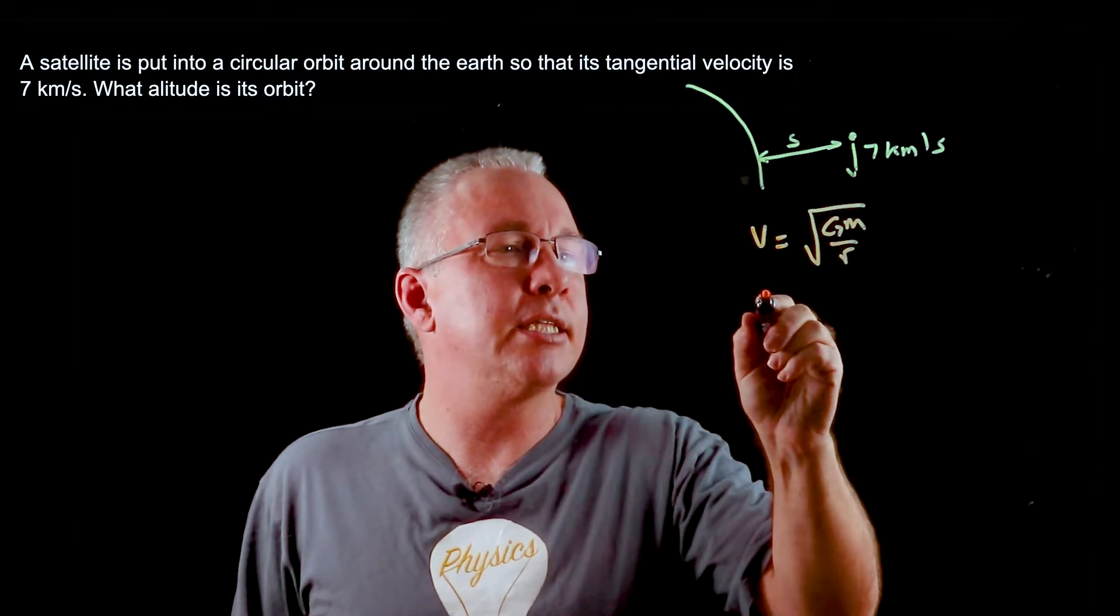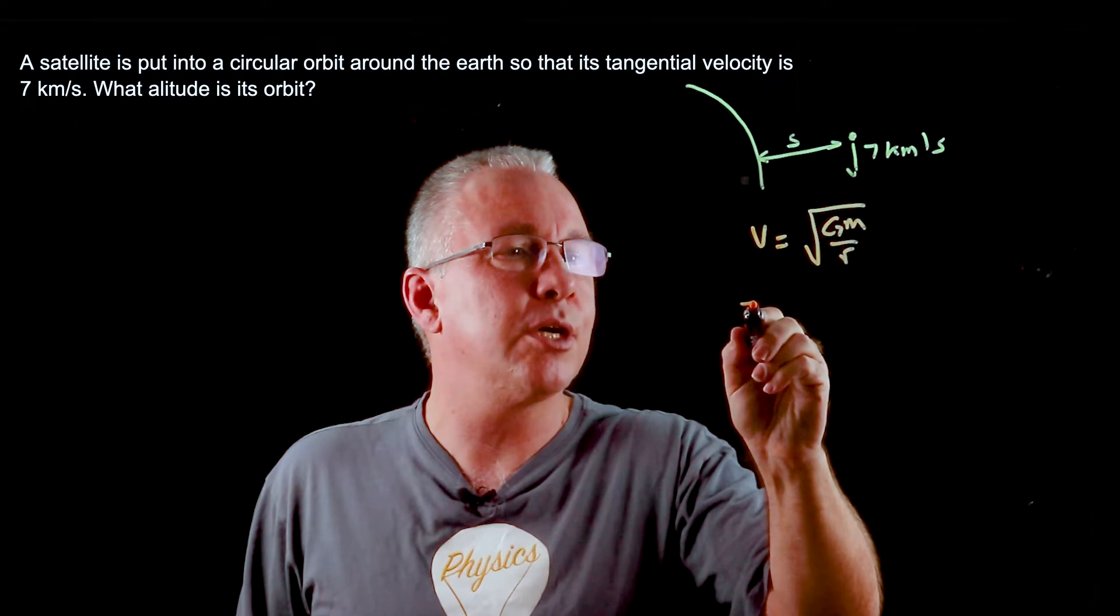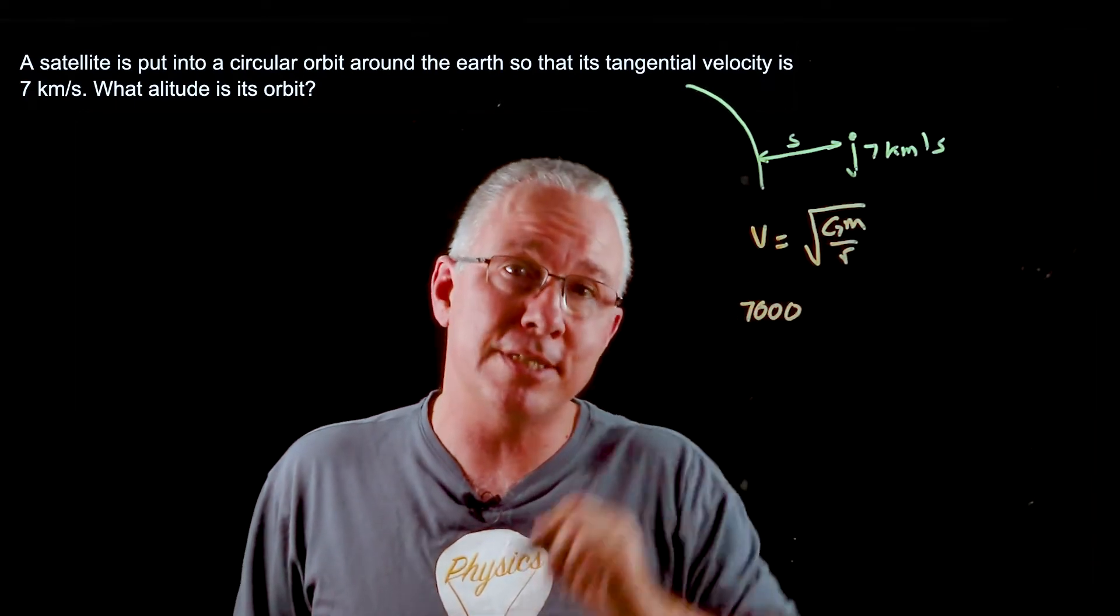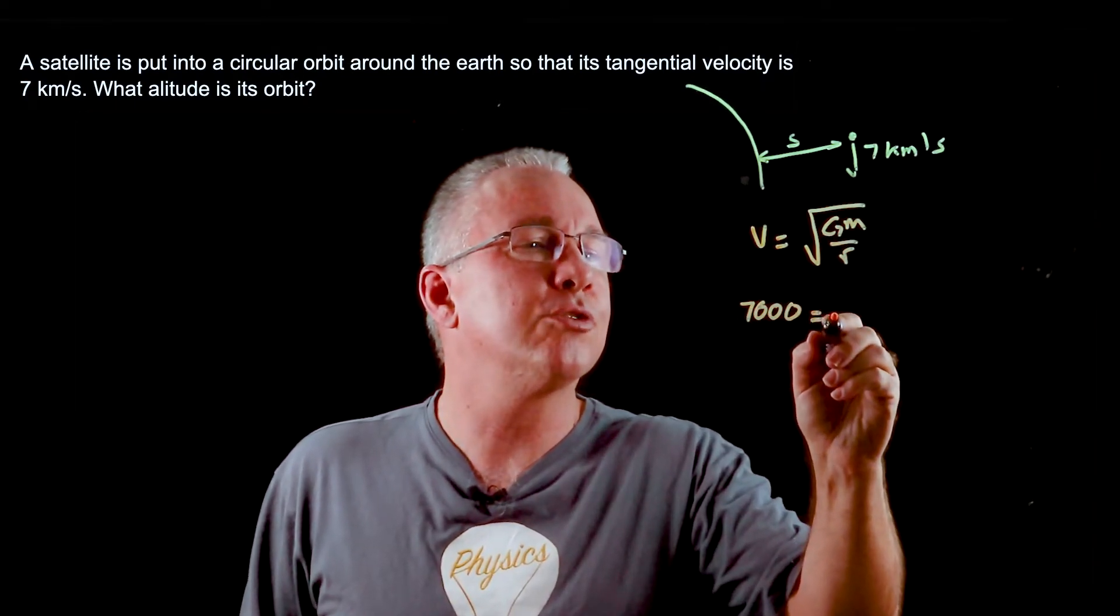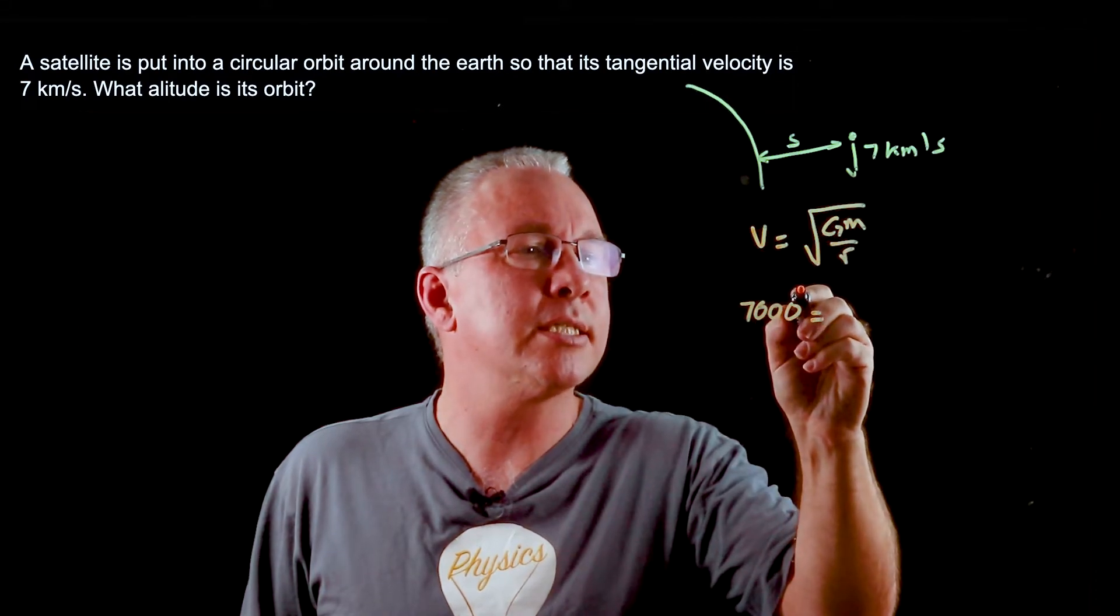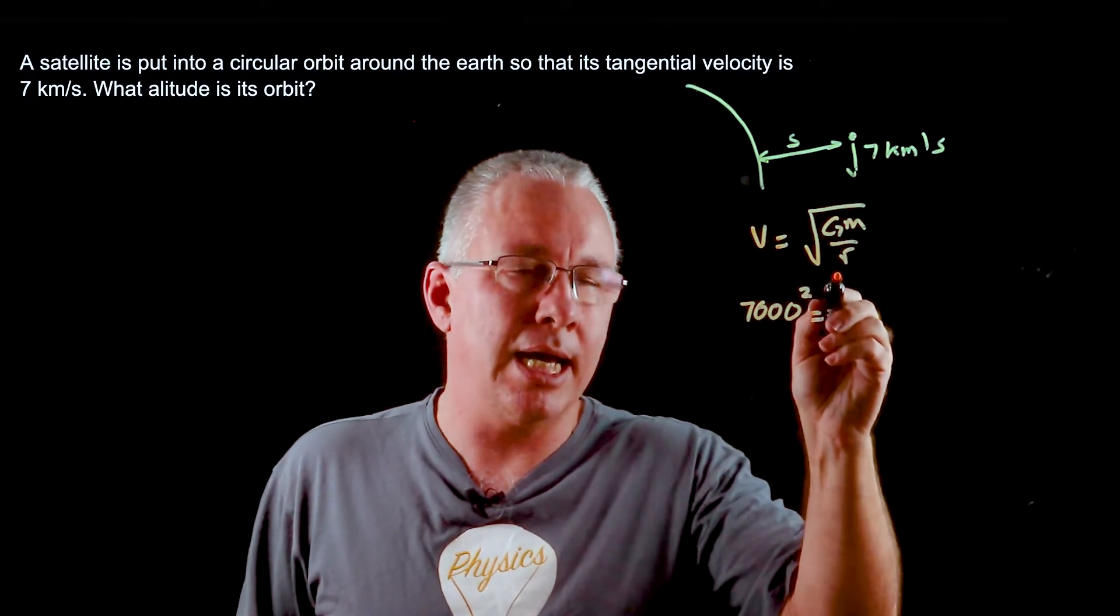We now substitute everything in. So we know this is 7 kilometers so it has to be in SI units. So we have 7000 is equal to, now I'm going to square this side because I want to work out r.